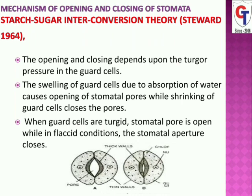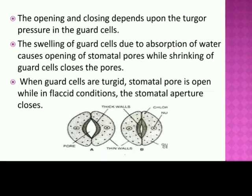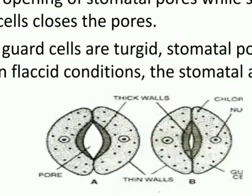Regarding the opening of stomata according to this theory: in the guard cell, the turgor pressure increases because of endosmosis. The increase in turgor pressure stretches the outer thin wall. As a result, the inner thick wall is pulled outward and this is responsible for the opening of stomata.